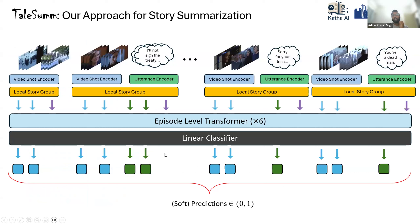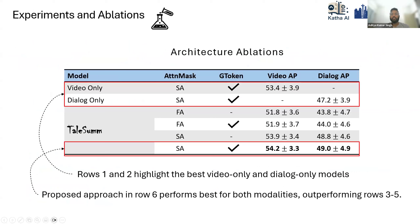At the end, we pass predictions from the transformer corresponding to video and dialogue tokens to a linear classifier. For architecture ablations — using AP as our metric — we compare the proposed sparse attention against full attention and ablate the group token. The proposed approach with sparse attention performs best for both modalities. We also compare against video-only and dialogue-only baselines — none of the compared methods are built for processing 40-minute videos, and we adapt them for our task.